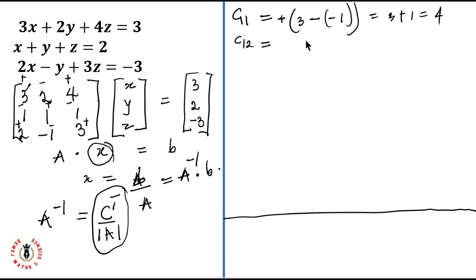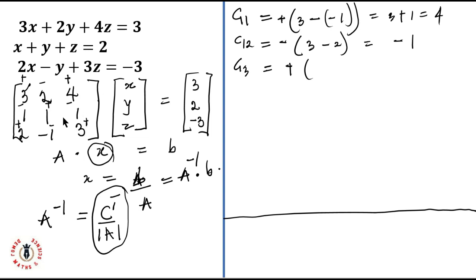C12 is negative, giving us minus one times three minus two, which equals minus one. C13 is positive: the determinant of the 2×2 minor with elements one, one, two, minus one gives us minus one minus two, which equals minus three.